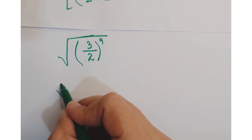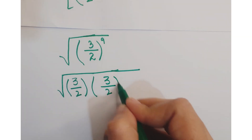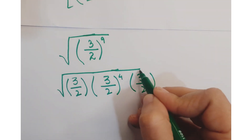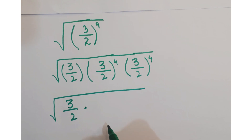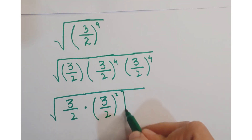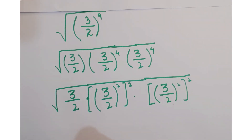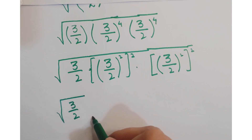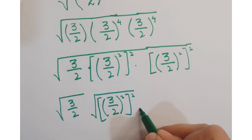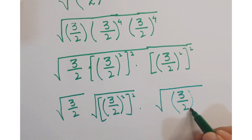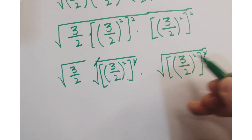Further, you can simplify it: we have 3 upon 2 whole to the power 9, which can be written as 3 upon 2 into 3 upon 2 squared, whole to the power 4. You can then write them into separate square roots.